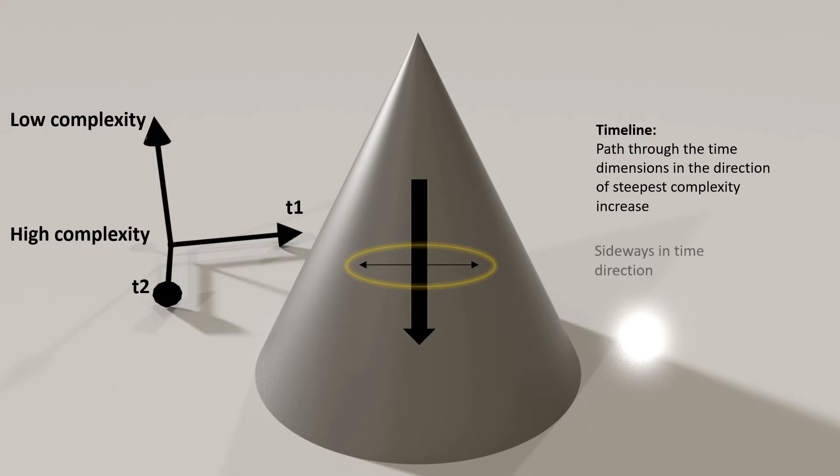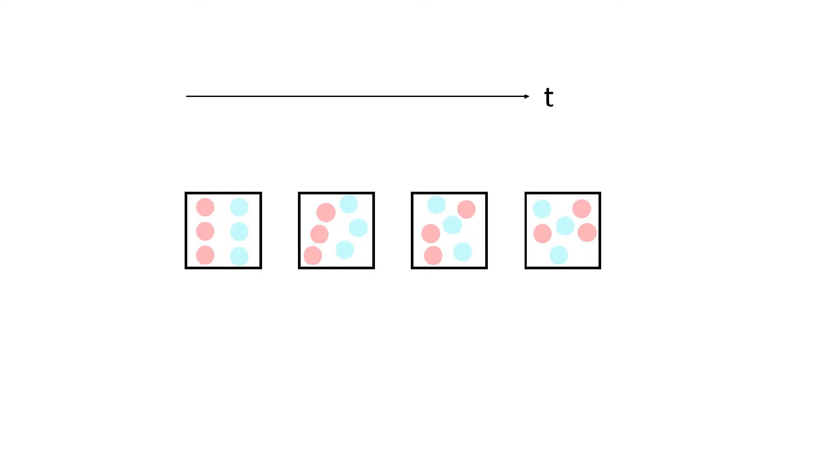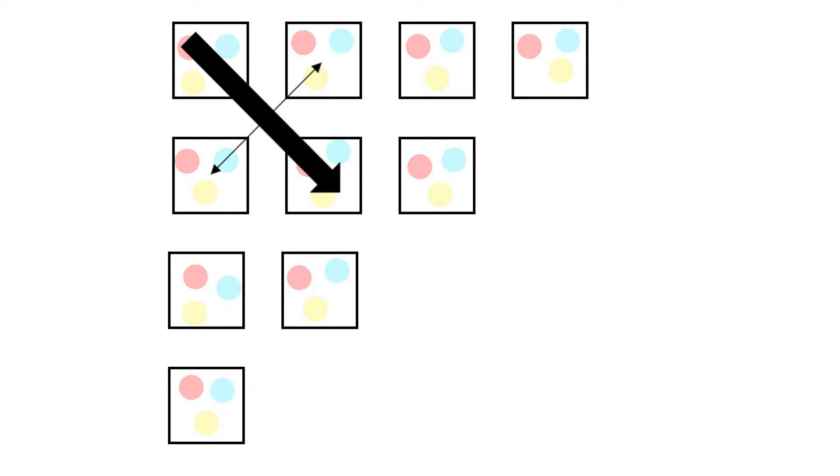With two or more time dimensions, the timeline is not unique. A marble will roll down the steepest slope. But if you place another marble somewhere else, it will roll down a different path of the same maximum slope. Also, the timelines diverge, making room for more paths in between. With a single time dimension, the number of 3D spaces stays a constant 1 per time coordinate. But with multiple time dimensions, the number of spaces sideways in time increases.